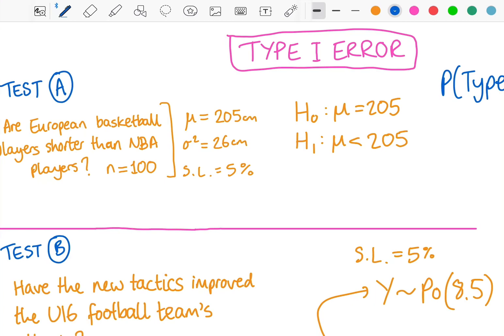I've got in my first example here that I'm testing whether European basketball players are shorter than NBA basketball players. I'm looking at the heights of 100 European basketball players, and I'm comparing it to the NBA mean of 205 centimeters with variance 26. There was a significance level of 5% for this test.